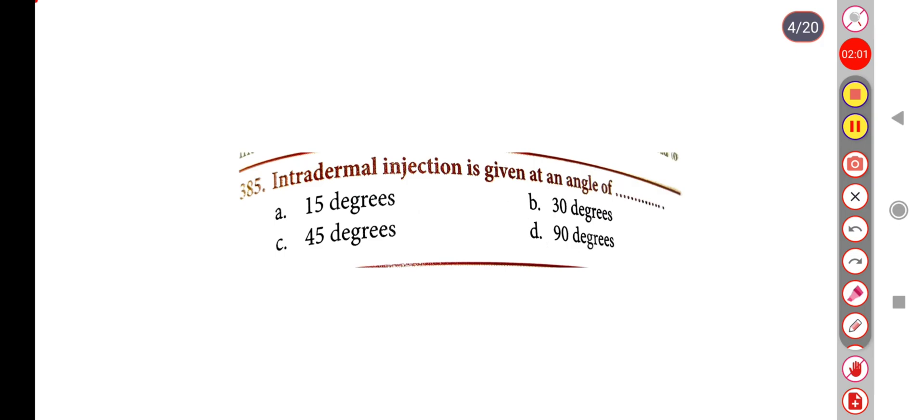Intradermal injection is given at an angle of — Option A: 15 degrees, Option B: 30 degrees, Option C: 45 degrees, Option D: 90 degrees. Correct answer is Option A: 15 degrees.